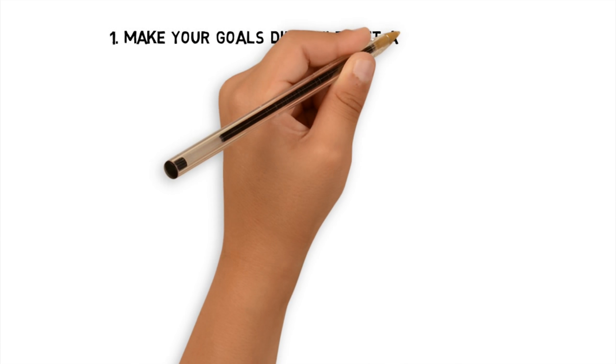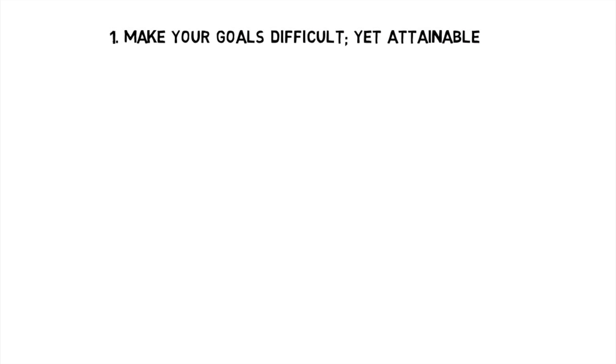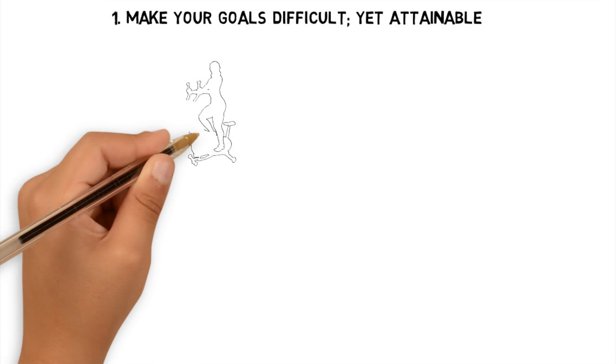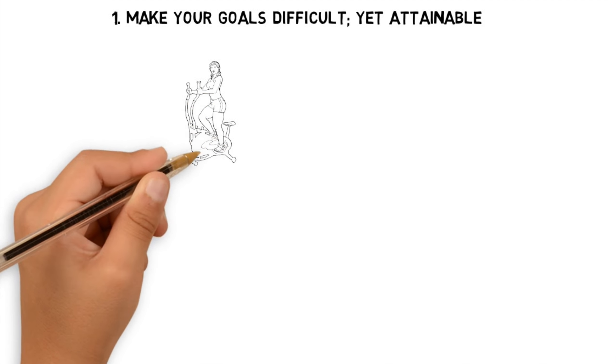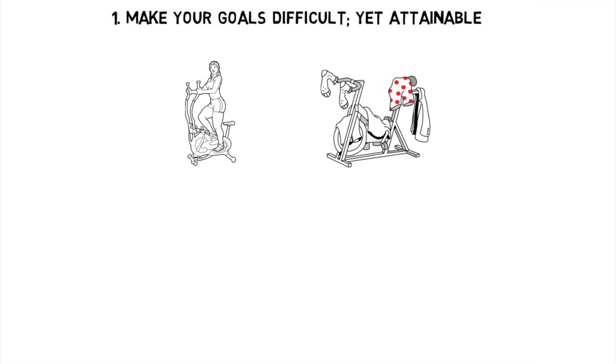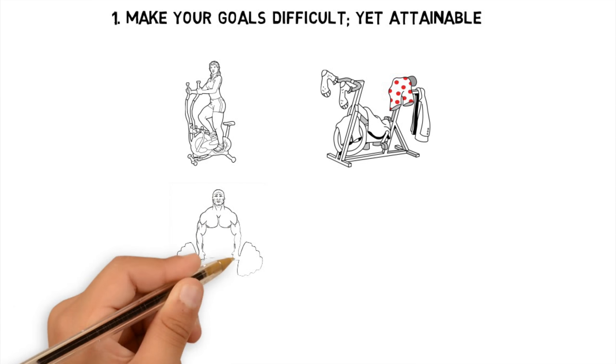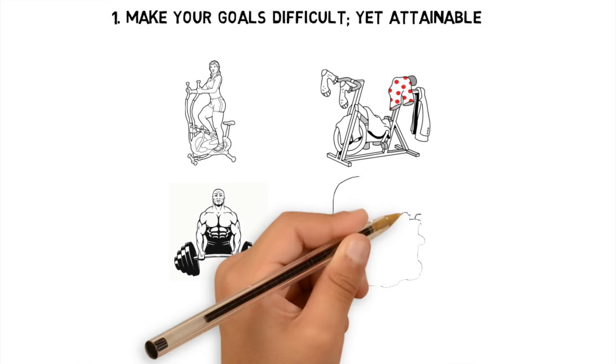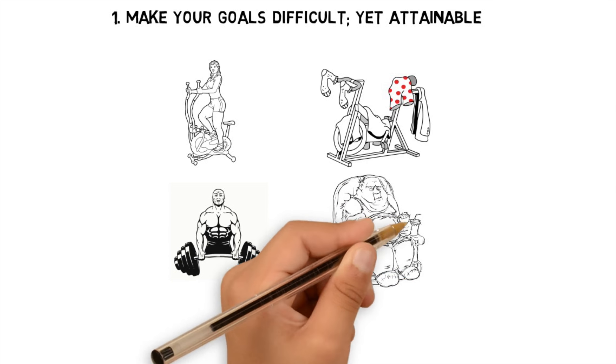Number one: make your goals difficult yet attainable. And this is where most people screw up their goals. They either one, make their goals really easy so they feel they're a total waste of time, or two, they make them super freaking hard so they have no realistic chance of actually achieving that goal.